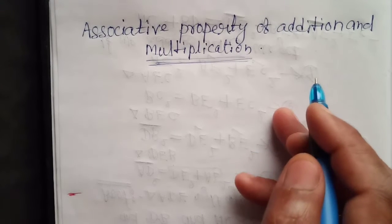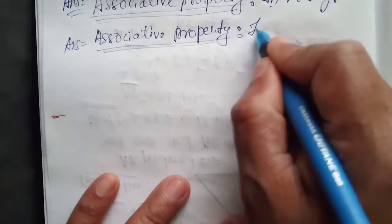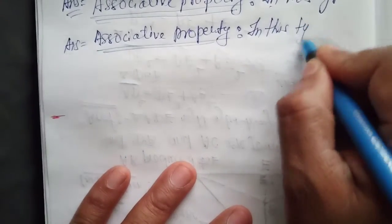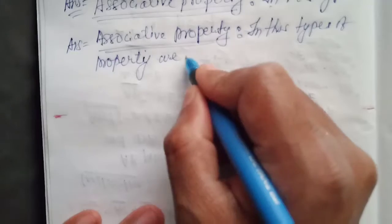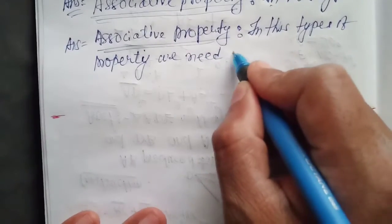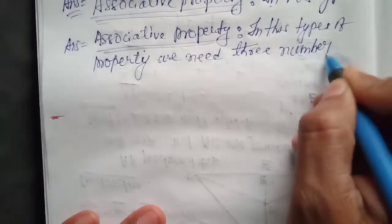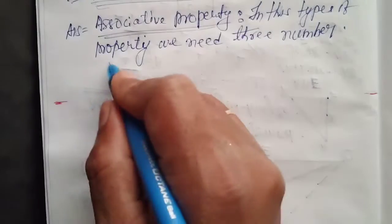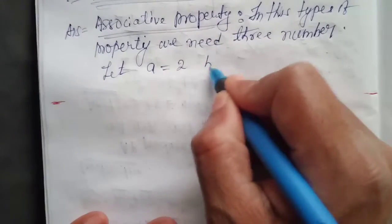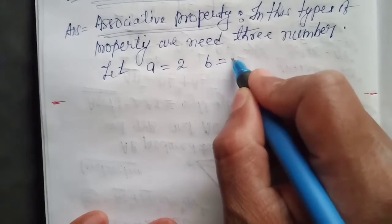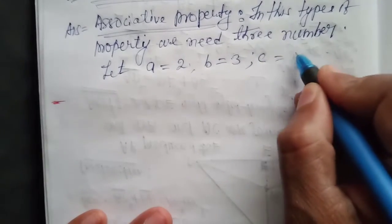Dear students, I am going to explain the associative property of addition and multiplication. For this property, we need three numbers. Let's suppose a is taken as 2, b is taken as 3, and c is taken as 5.